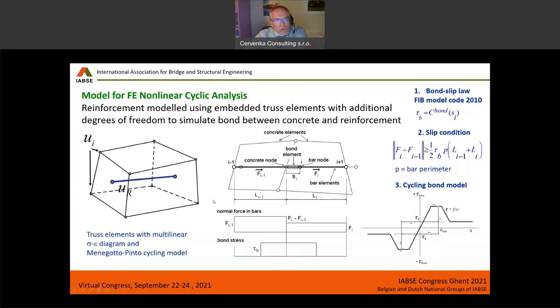It is important, of course, also to consider the bond, possibility to lose bond between concrete and steel. And for that we account by adding additional degrees of freedom at each reinforcement node representing slips. And then we can apply a slip law at each of these nodes. We are using the FIB model code slip law.